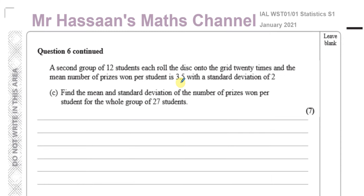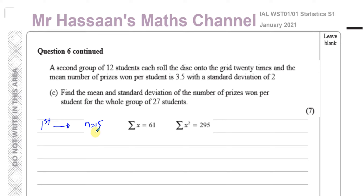Part C: a second group of 12 students each roll the disk onto the grid 20 times, and the mean number of prizes won per student is 3.5 with a standard deviation of 2. Find the mean and standard deviation of the number of prizes won per student for the whole group of 27 students. For the second group, n equals 12, the mean is 3.5, and the standard deviation is 2.